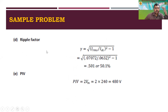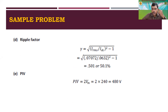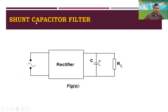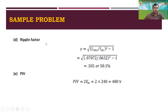For the ripple factor, the formula is γ = √[(IRMS / IDC)² − 1]. Solving this gives approximately 0.501, or 50.1%. For the PIV, since we have a center tap transformer the formula is PIV = 2 × VM. With VM = 240 V, PIV = 480 volts.